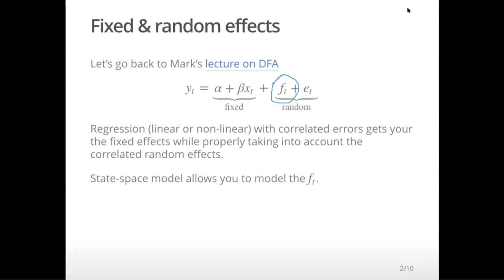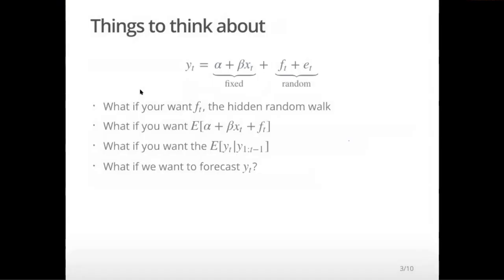It's not just that you want to take into account that your errors are autocorrelated. You would actually like to know what that autocorrelated random walk is, because in the context of your analysis, that means something. It's some hidden random walk that means something in your application.